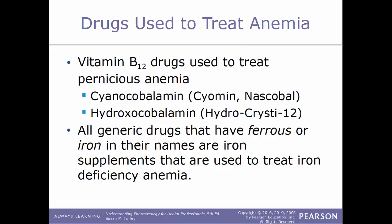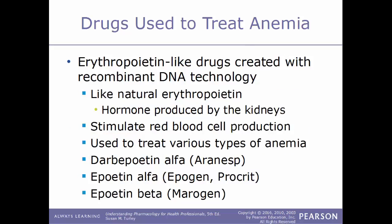Our first kind of drug for anemia is vitamin B12 drugs, which help treat pernicious anemia. Examples include cyanocobalamin, sold under the trade names Cyamin and Nascobal, and hydroxocobalamin, also known as Hydro Cobex. All generic drugs that have the term 'ferrous' or 'iron' in their names are iron supplements, used to treat iron deficiency anemia. Another type of drug used to treat anemia is erythropoietin-like drugs created with recombinant DNA technology.